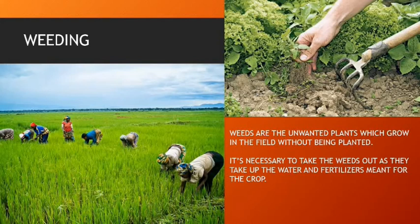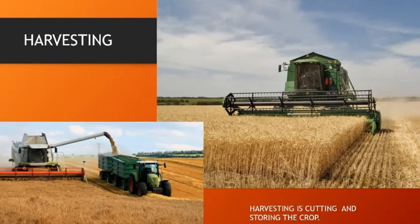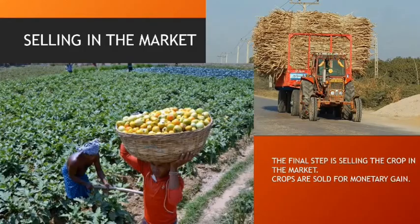The next step is weeding. Weeds are unwanted plants which grow in the field without being planted. It is necessary to remove the weeds as they take up the water and fertilizers meant for the crops. Then comes harvesting — harvesting is cutting and storing the crop. The final step is selling the crop in the market for monetary gain.